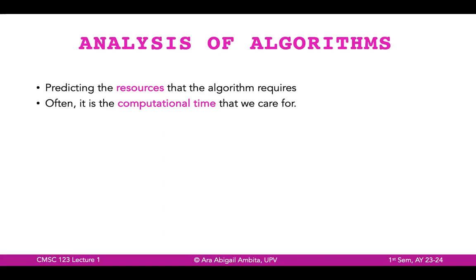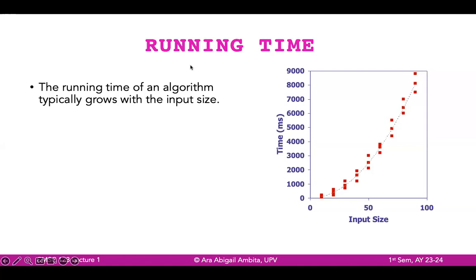Now, we know that a running time of an algorithm typically grows with the input size. So you can see here an example. Suppose you have an algorithm, and you tried to run it with varying input sizes. For example, you have an array, the size of an array containing, let's say, five elements. And as you can see, with just the five elements, the execution is so much faster. But you notice that as you increase the input size, or as you increase the size of the array to around 100 elements, you can also see that the running time is getting slower. So essentially, the running time of an algorithm typically grows with the input size.